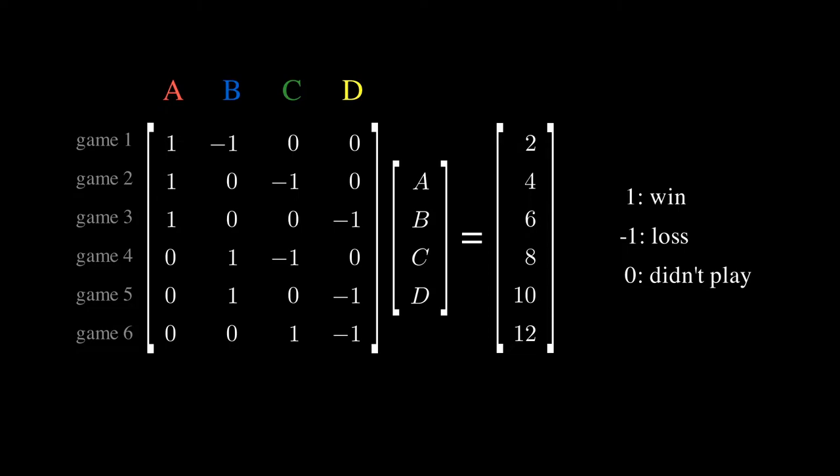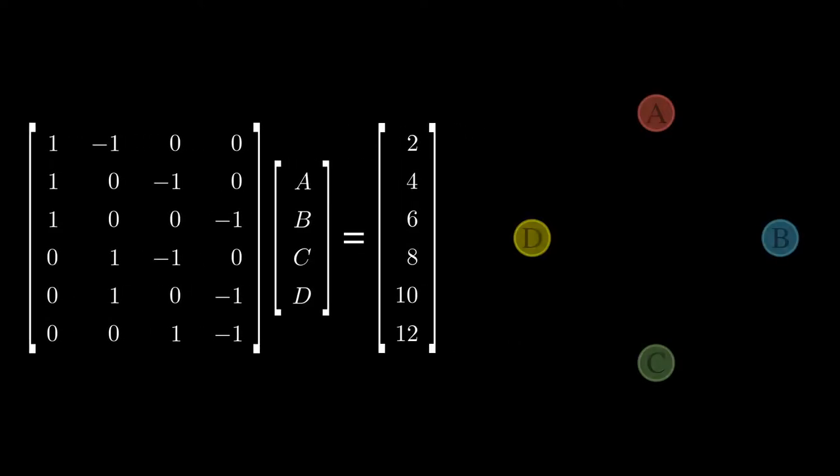The numbers in the b vector give us the score differential of the two teams. And the x vector here shows us the ranking of the teams. This information can also be shown in a directed graph with nodes representing the teams, and edges representing the games. Each node is labeled with the team's rating, and each edge is labeled with that game's score differential. Here the arrows point to the losing teams.